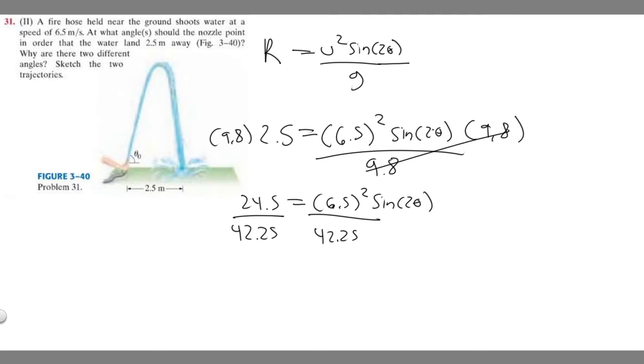So 24.5 divided by 42.25 is going to give you 0.57988 and so on. And so we're going to set that equal to the sine of 2 theta.